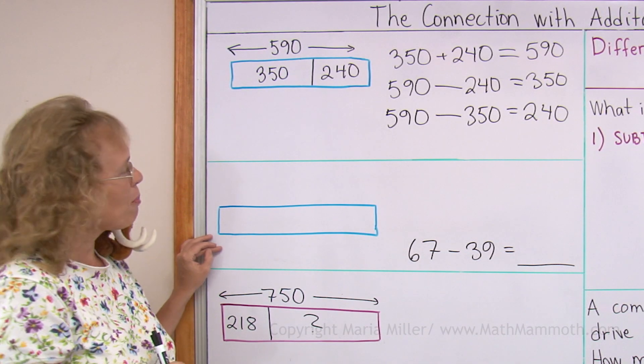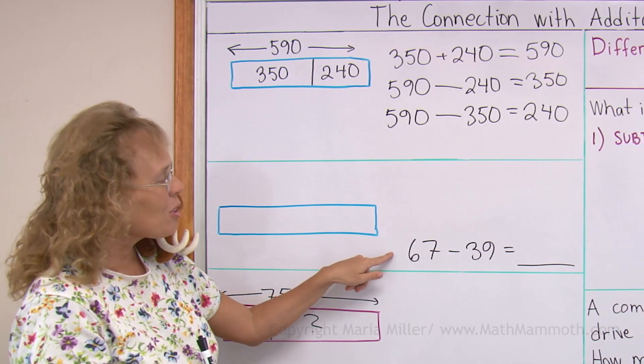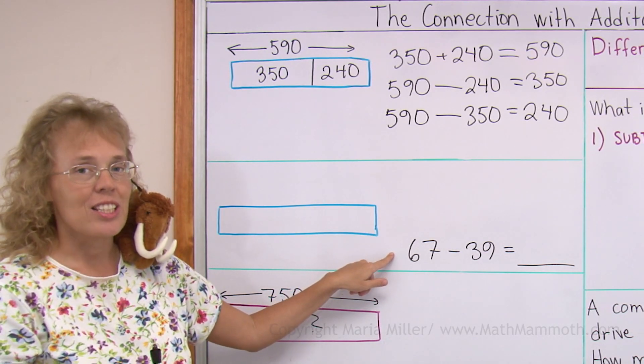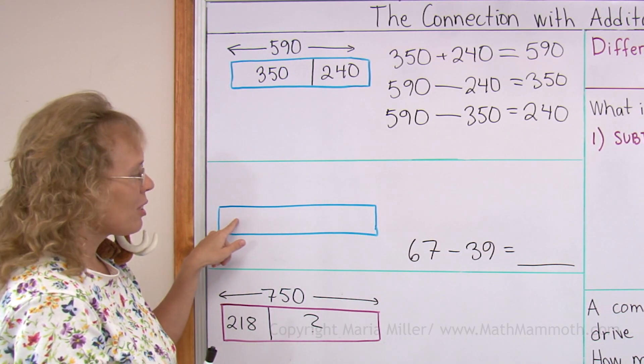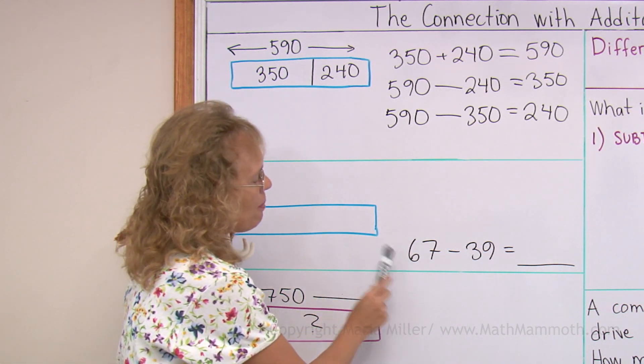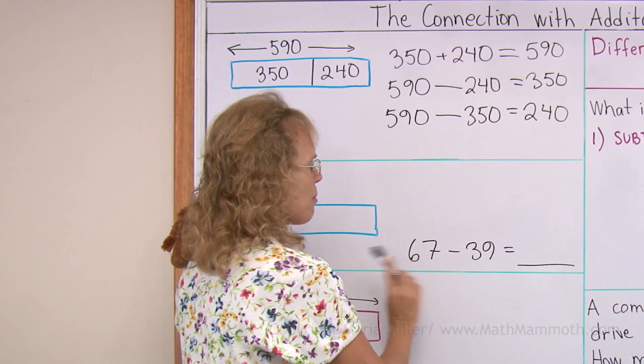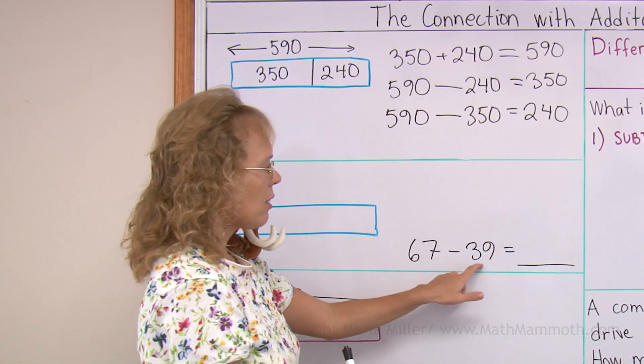Over here is a bar model that needs filled in, and I wrote here one of the subtractions that matches with this bar model. So now what? Maybe we could solve the subtraction. If nothing else, 67 minus 39.